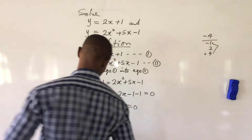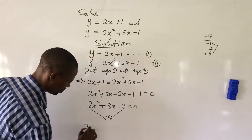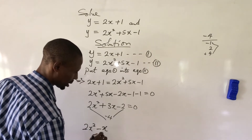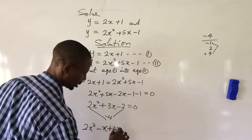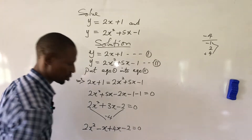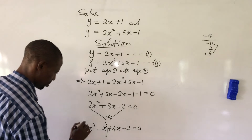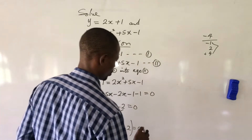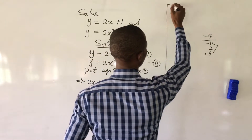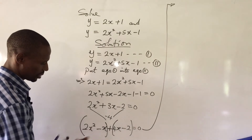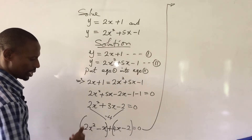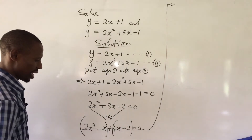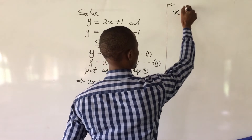We input this into our equation, giving us 2x squared minus x plus 4x minus 2 equal to 0. We put the first two terms in a bracket and the last two terms in a bracket. Now we look at the terms in the first bracket — what is common to 2x squared and minus x is just x.